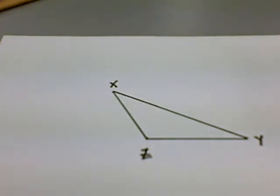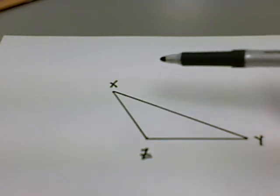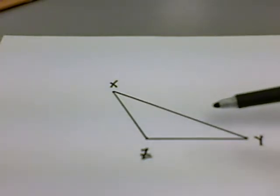In this video, I'm going to demonstrate the steps for constructing an altitude to a triangle. You'll notice that the triangle I chose is an obtuse triangle.